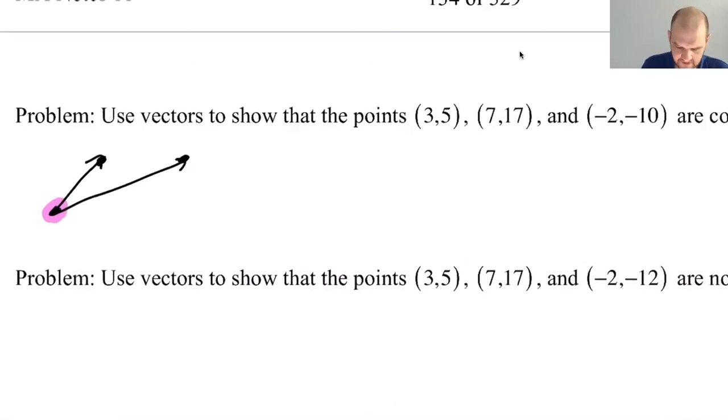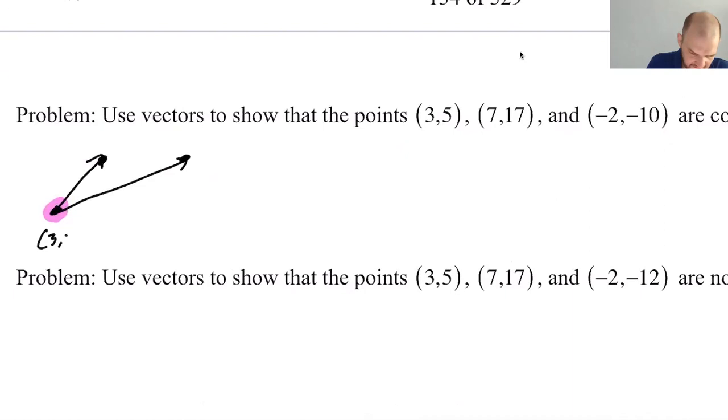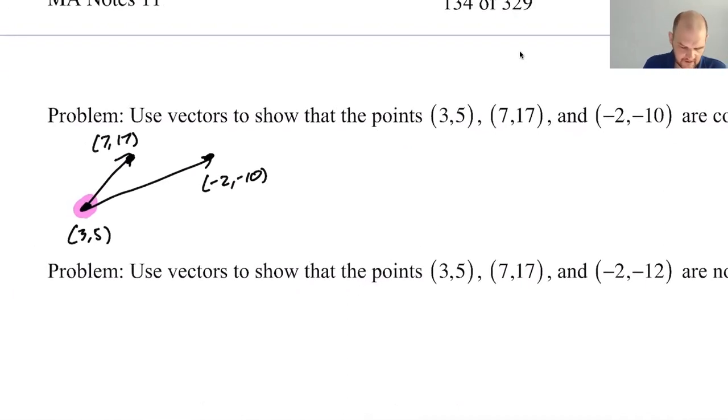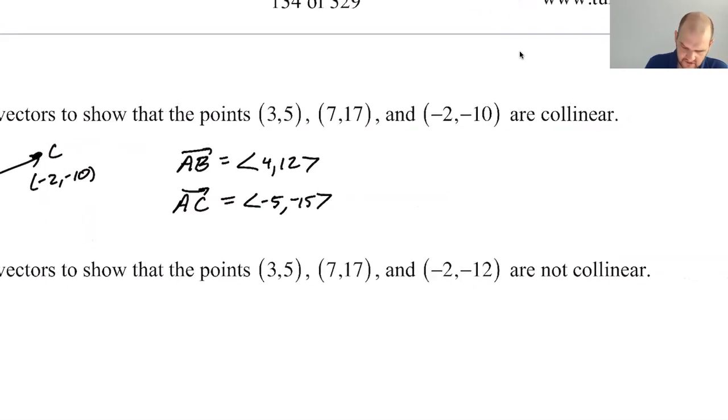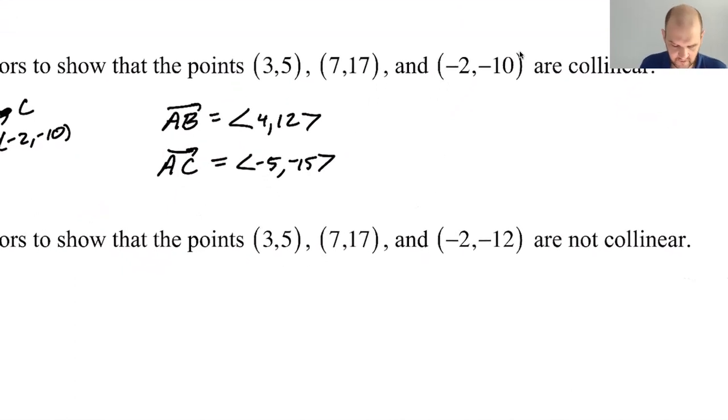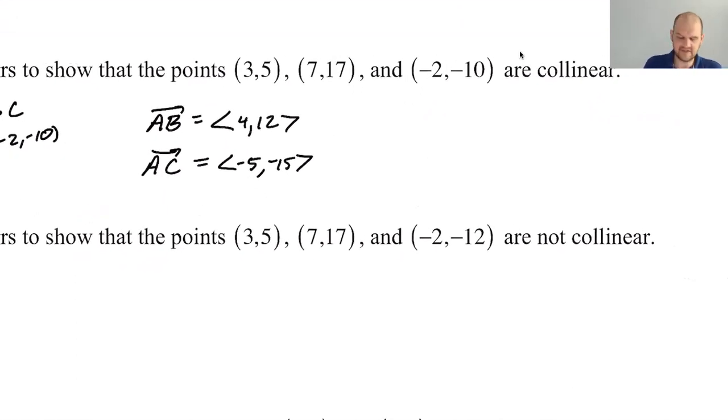So let's see what happens. So I'm going to say that this is the point (3,5). And then you definitely don't want to worry about the accuracy of your drawing. You just want to get an idea, right? So let's call this A, B, and C, I guess. So the vector AB is going to be 7 minus 3 is 4, and then 17 minus 5 is 12.